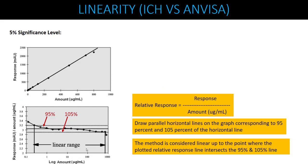ANVISA also discusses calculation at the 5% significance level. You plot amount versus response, then convert your response into relative response using the formula: response divided by amount. Convert your amount into a log term and draw a graph of log amount versus relative response — this gives a horizontal line. Draw parallel horizontal lines at 95% and 105% of that line. The method is considered linear up to the point where the relative response line intersects the 95% and 105% boundaries.